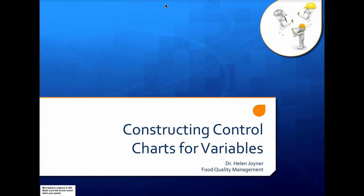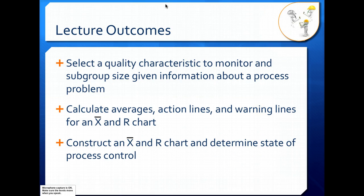Now that we know the basics about control charts for variables, let's take a look at how to put them together. In this lecture, we'll talk about selecting quality characteristics to monitor and our subgroup size or sample size given information about a process problem. We'll figure out how to calculate averages, action lines, and warning lines for an X-bar or mean and R-chart, and we'll take all that data and construct an X-bar or R-chart and determine state of process control.